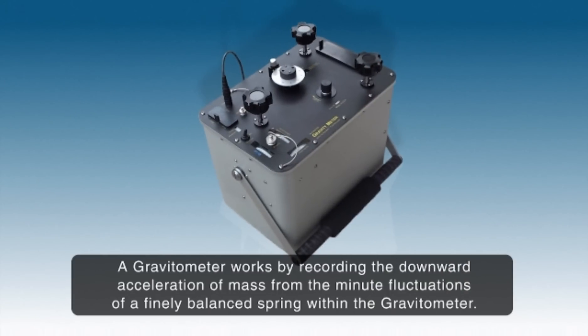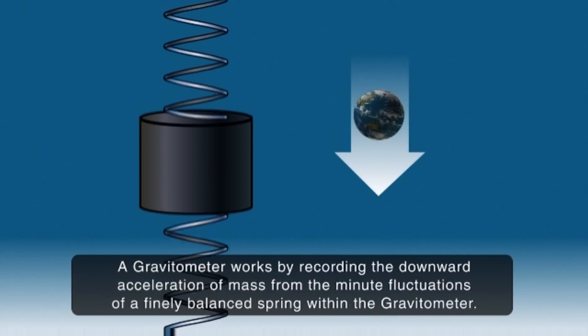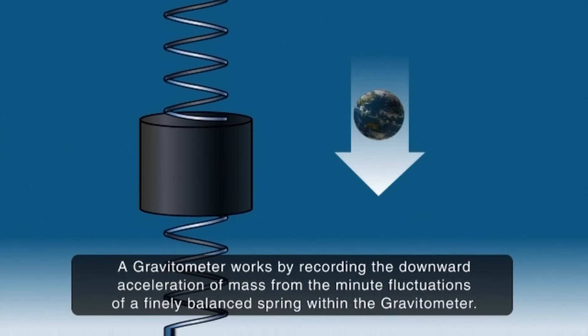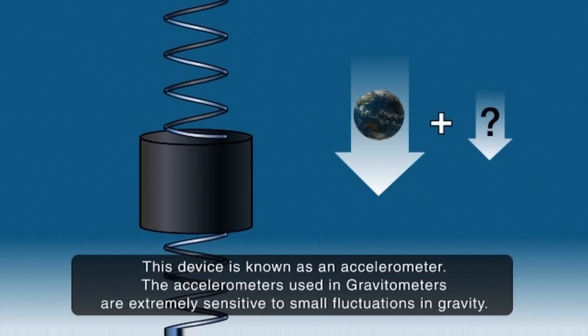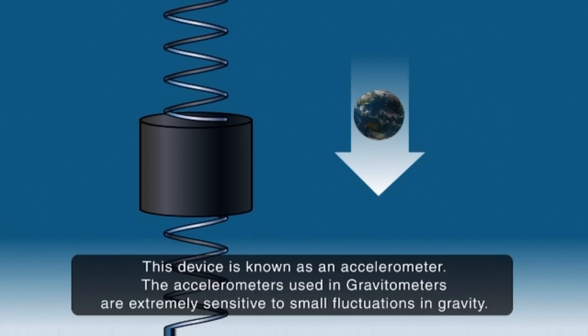A gravitometer works by recording the downward acceleration of mass from the minute fluctuations of a finely balanced spring within the gravitometer. This device is known as an accelerometer. The accelerometers used in gravitometers are extremely sensitive to small fluctuations in gravity.